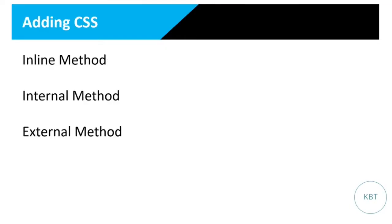There are basically three ways in which we can add CSS into our work, and we are going to look at all three of them. We are going to explore all three and see which one is the most efficient based on the kind of work you are trying to do. The first is the inline method, then there is the internal method, and the external method. We are going to start with the inline method.